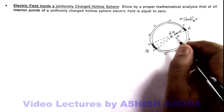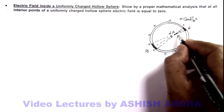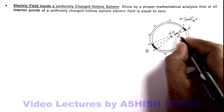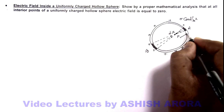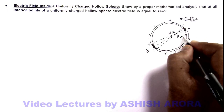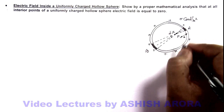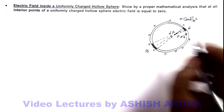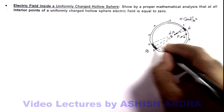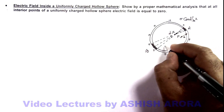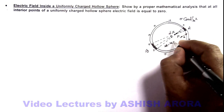Now in this situation, if R is the radius of the sphere and we consider point P located at a distance x from one side of the diametrical line, then on the other side the distance of point P from element B will be 2R minus x.